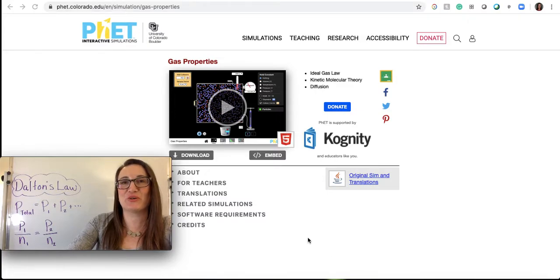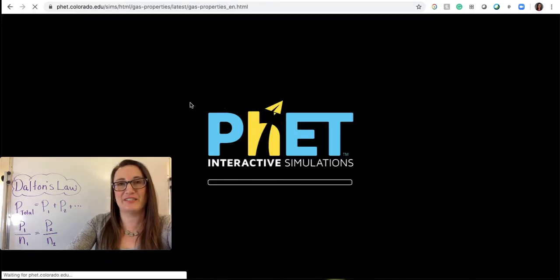I'm going to use a PhET simulation to go over the two most common versions of Dalton's Law. You could try the PhET simulation by going to this URL, hitting play, and then choosing the ideal option.